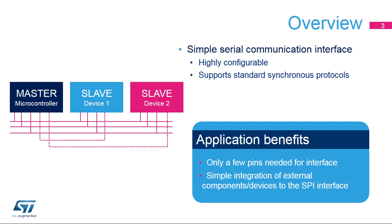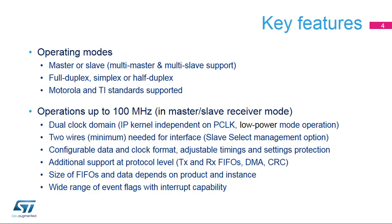Applications benefit from the simple and direct connection to components, which only requires a few pins. Thanks to the highly configurable capabilities of the SPI, many devices can be simply accommodated in the existing project. The STM32 SPI offers various operating modes that are explained in more detail in this presentation. The communication speed can't exceed half of the internal bus frequency, and a minimum of two wires is required to provide the serial data flow synchronized by a clock signal in a single direction.